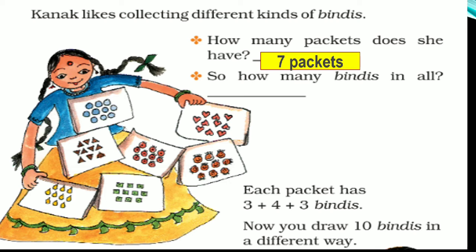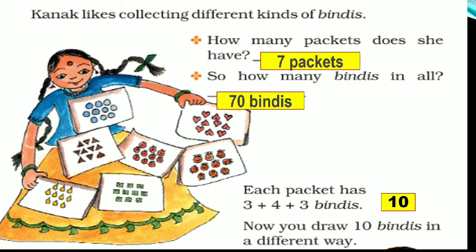How many bindis in all? 1 packet, 10 bindis. 7 packets, 70 bindis. Now, if you observe carefully, you will notice that there is a pattern of 3 plus 4 plus 3 on each of the packets. 3 plus 4 is 7, and 7 plus 3 is 10. Children, it's very easy to count the total if the numbers or items are arranged in a pattern. Now, you draw 10 bindis in a different way. You can arrange in the pattern 5 plus 5 or 2 plus 8 and likewise.